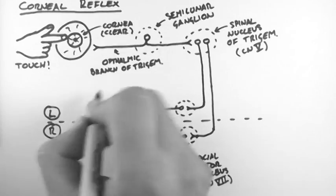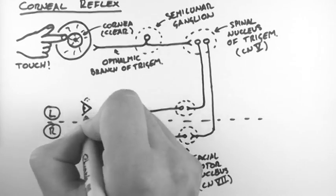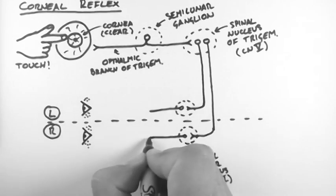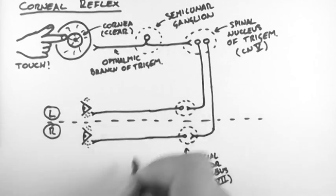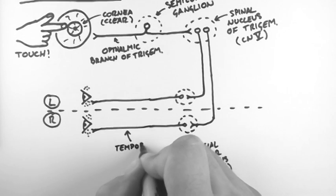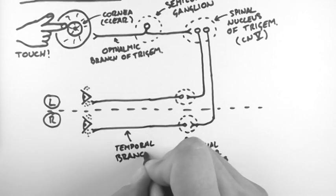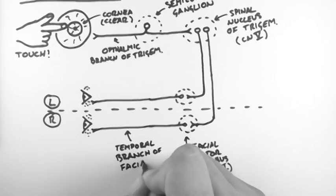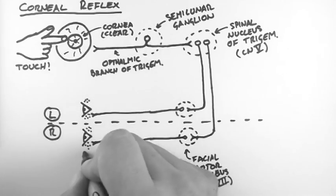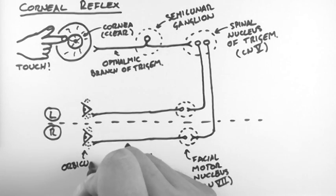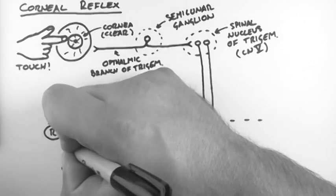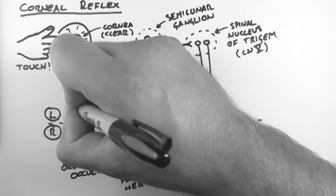Then the motor nuclei of seven have nerves which project out from there. Now these project onto a ring of muscles which surround the eye. And this nerve is the temporal branch of the facial nerve. And this muscle that it projects onto is called orbicularis oculi, and that causes that ring of muscle to contract and causes both the eyes to blink.